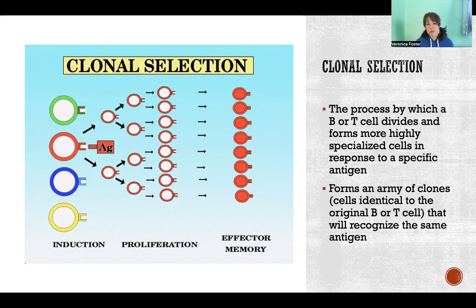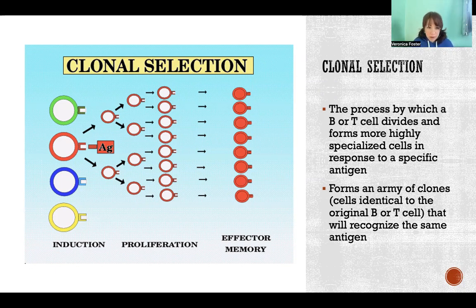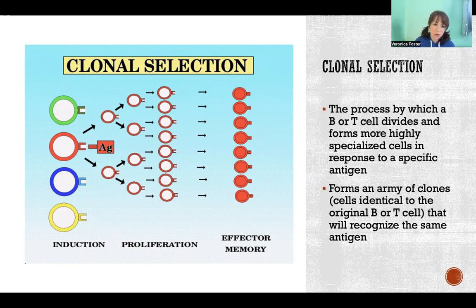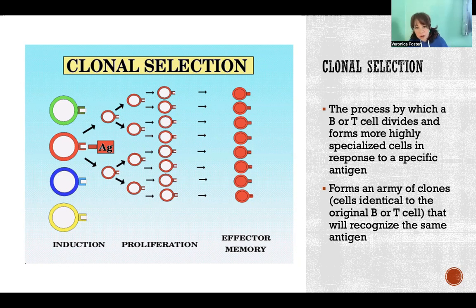Once a B or T cell encounters the pathogen that it's going to spend its whole life destroying, at that point we would say that that cell has differentiated. So it's no longer a naive blank slate cell — now it is differentiated and it is forever going to target that specific pathogen. When that happens, it will start to divide and make a whole army of cells that are exactly identical to that original cell.